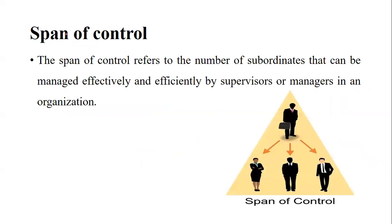Span of control refers to the number of subordinates that can be managed effectively and efficiently by supervisors or managers.